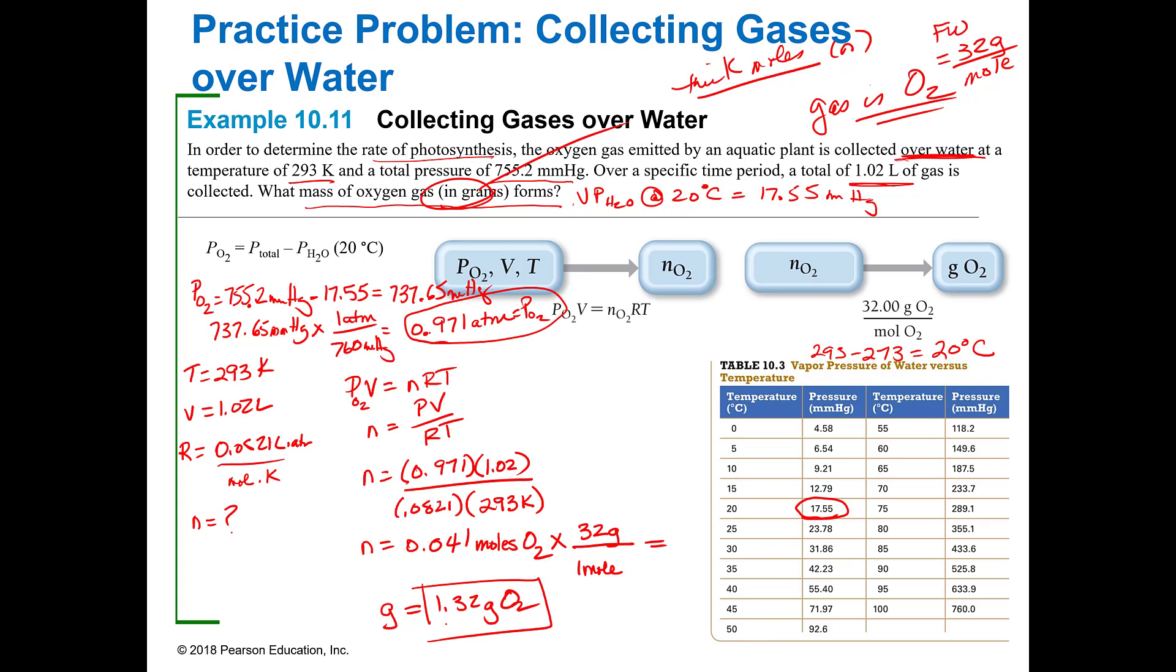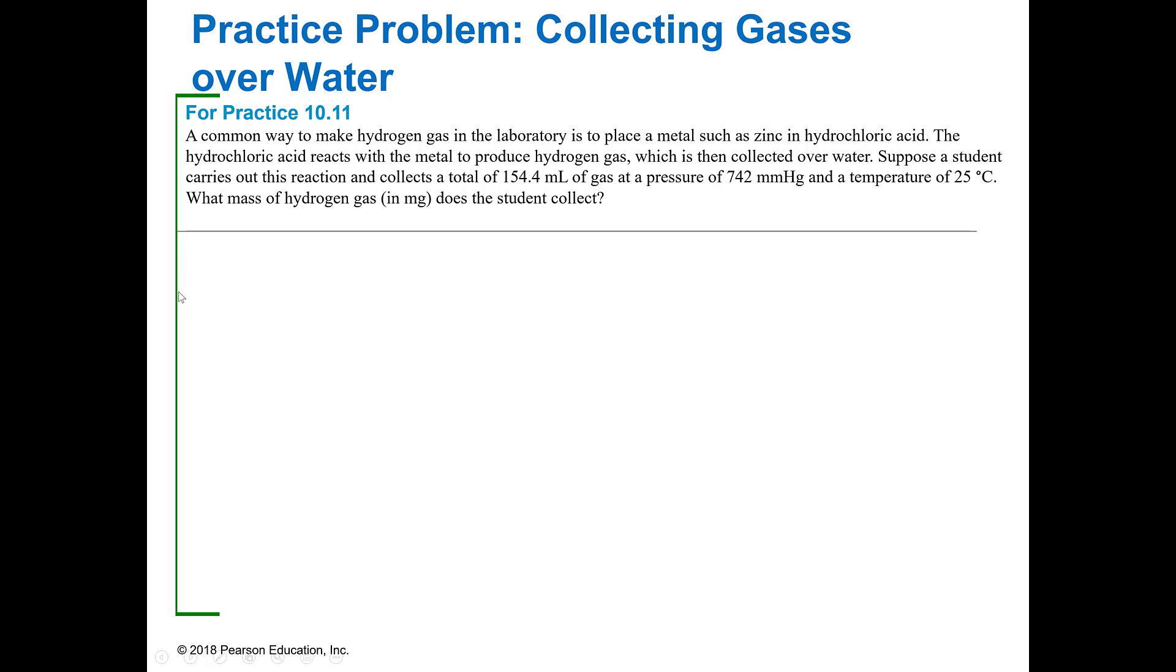So the only difference in this problem and just regularly working a problem is since it was collected over water, you've got to correct for the water vapor. You do that in that first step and subtract that pressure from your stated pressure, your total pressure, and that's the pressure that you'll use. Simple as that. Then I have one for you to do. Notice it wants it in milligrams this time, so when you get to the grams you'll have to convert that to milligrams. That is how you can collect gases over water and use the PV equals nRT to figure out what the mass of that gas is that you collected.